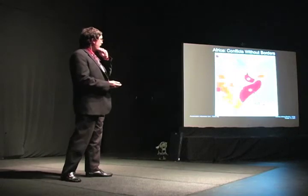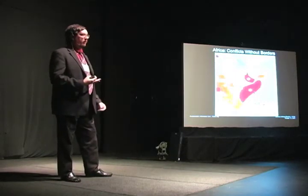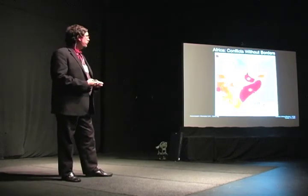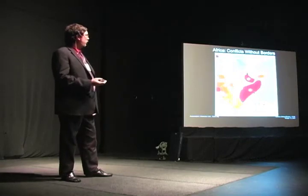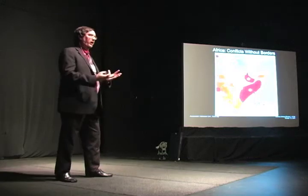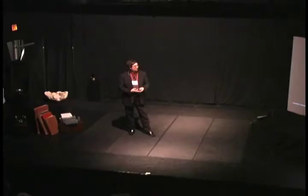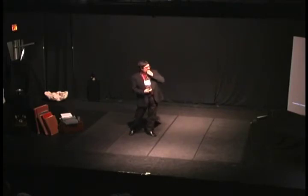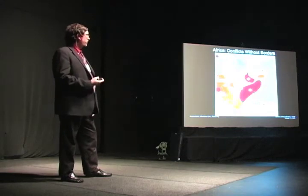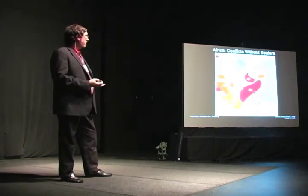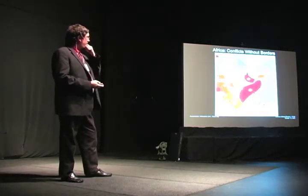We defined the conflicts by color: red for armed conflicts between a government and an armed insurgent group; orange for intercommunal strife — conflicts between tribes, clans, religious groups, or ethnic groups; and yellow for conflicts triggered by political events such as elections, political strikes, or similar things. We also got piracy incident data from UNISAT and plotted that off the coast of Somalia using X markers, and added targeted attacks — terrorist attacks against buildings, assassinations, and IED-type attacks — represented by red cherry bomb symbols.